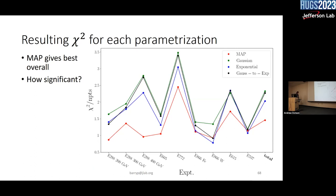Let me tell you what these mean in terms of chi-squares. The MAP is in red; the Gaussian, exponential, and Gauss-exponential are in green, blue, black. Across the board, MAP does better for everything, especially for the E288 400 GeV data — the one that had problems above and below the Upsilon resonance. It actually does a very good job fitting all of those data. The chi-square number of points looks good for all the total data sets.